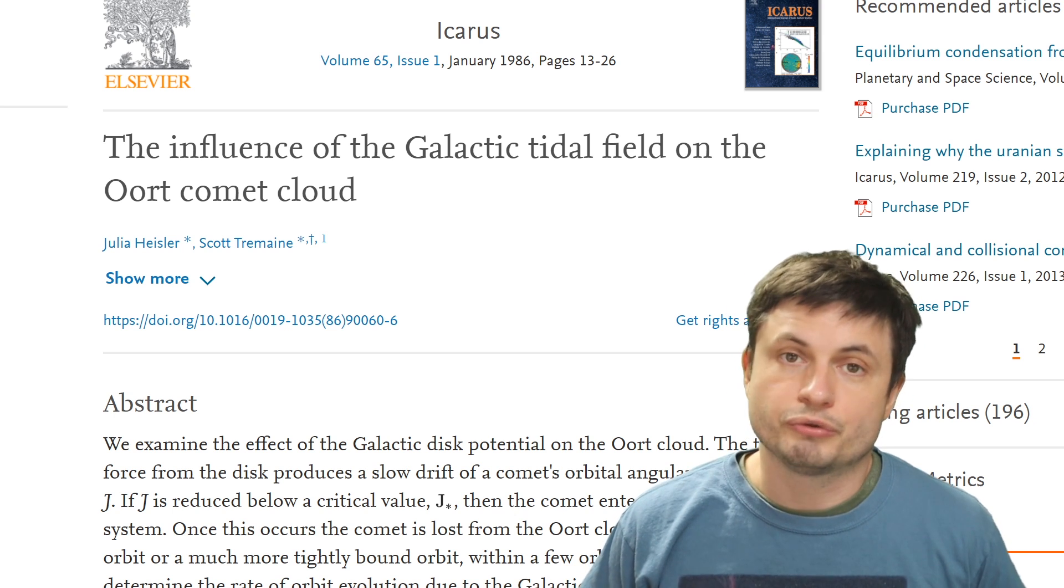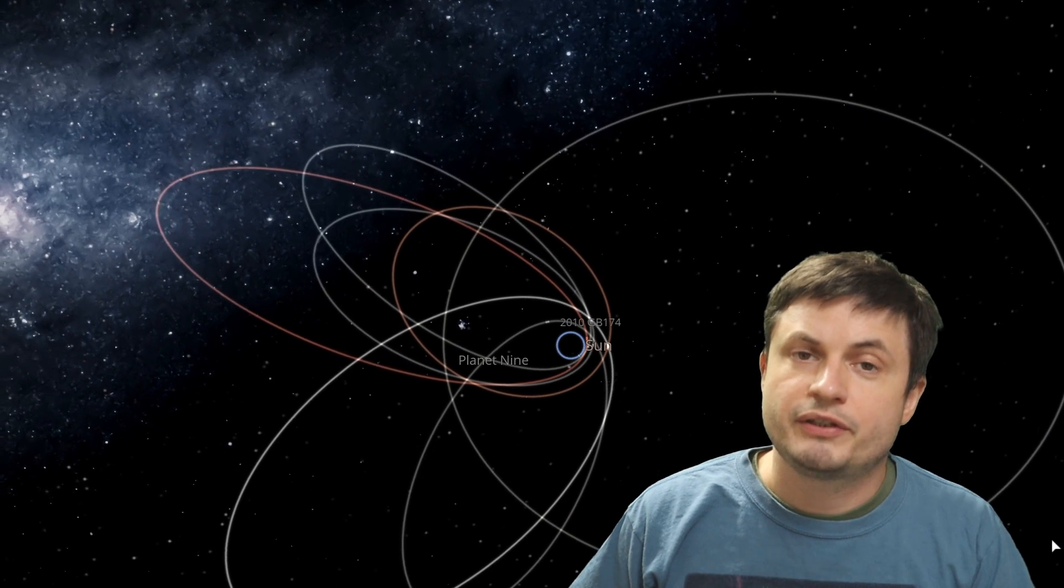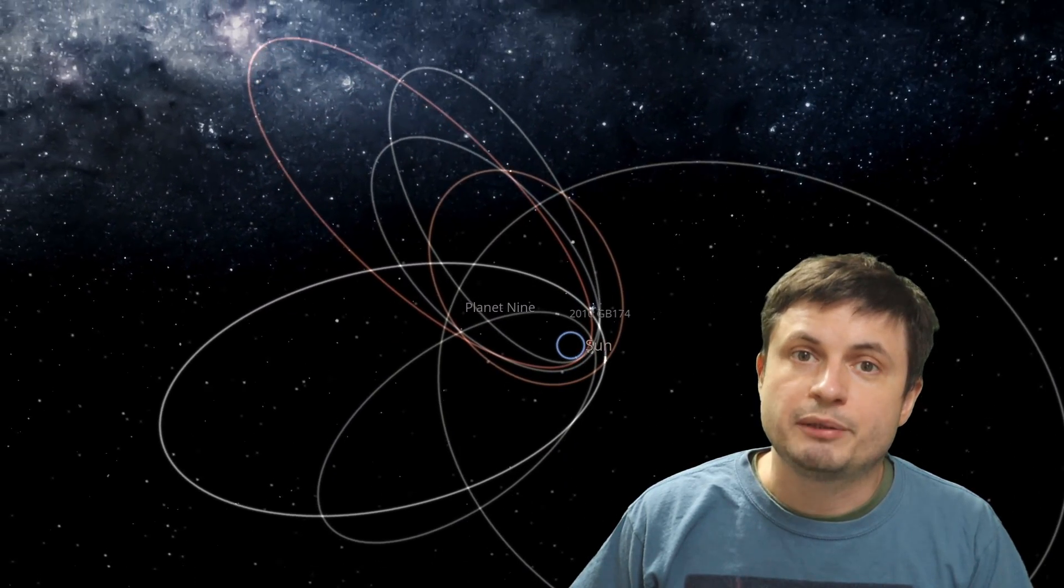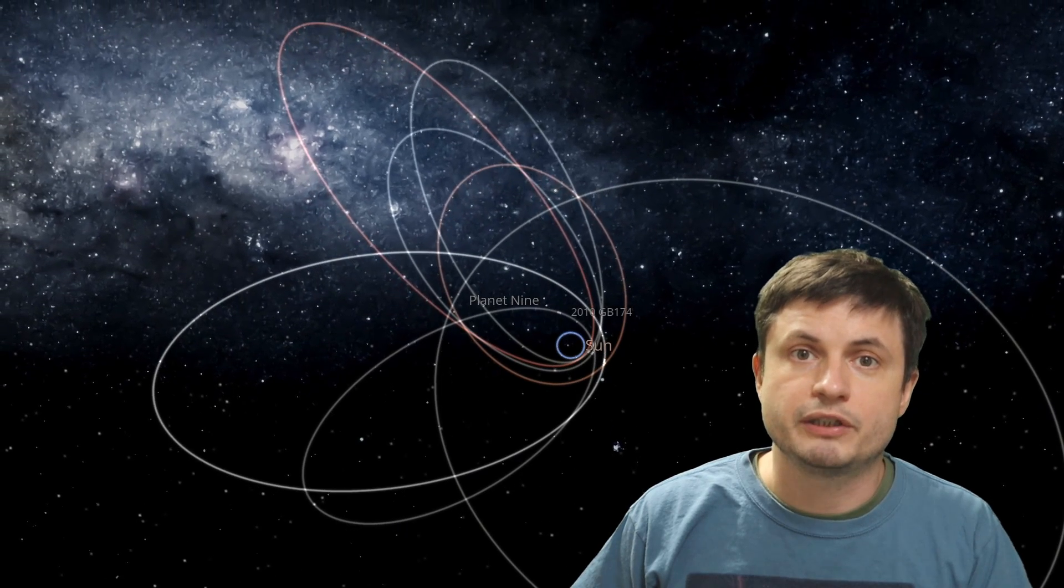While at the same time this also raises the question whether some of the evidence from the search for the planet 9, for example, could also be explained by the actual effects from gravitational tides. And although the new plane doesn't really have a name yet, the scientists behind this paper refer to it as the empty ecliptic.